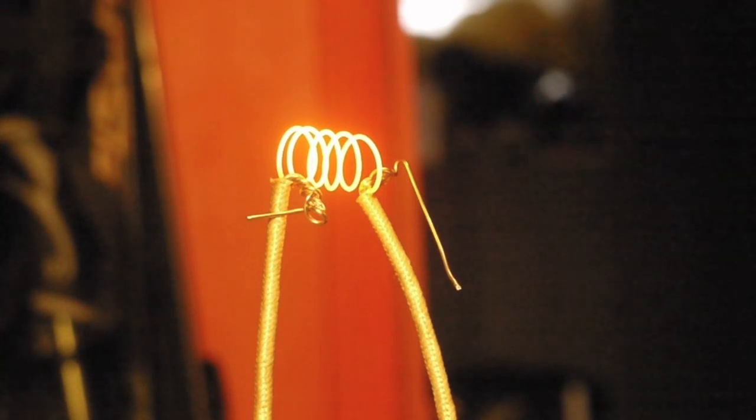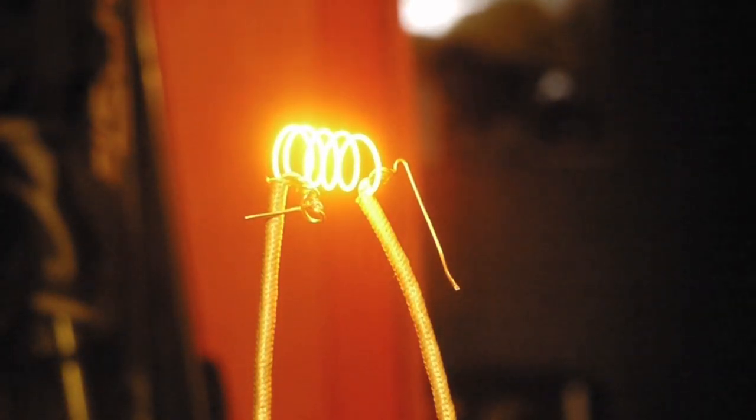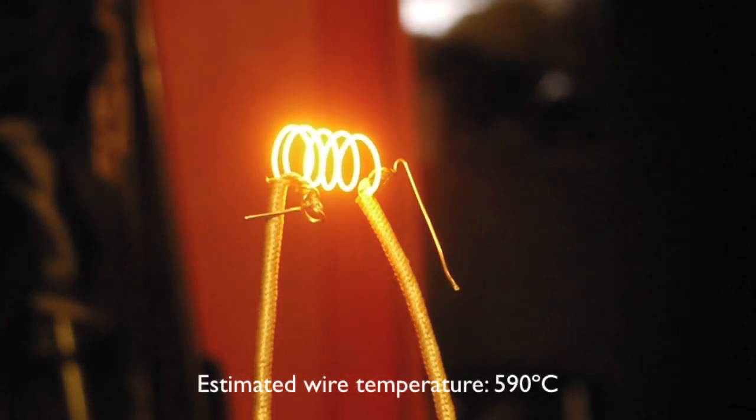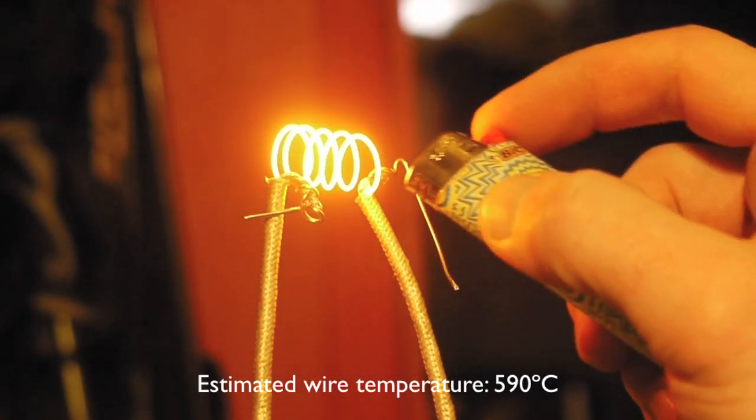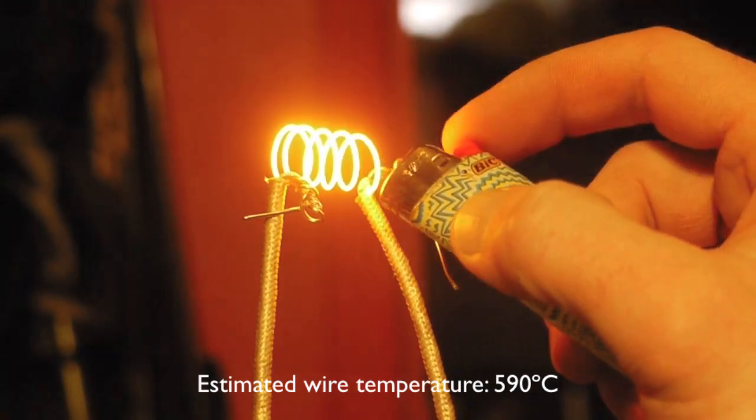Now I should be able to turn it up a bit more, still stay within the ratings of the variac. Okay, now we're running at about 8 volts, so it'll be about 9 amps, which is about as high as the variac rated for. And at this temperature we get auto-ignition pretty much right away.